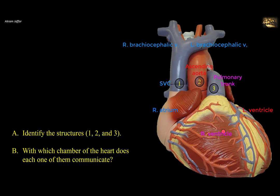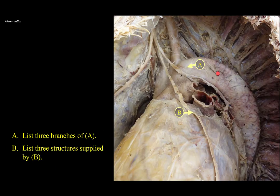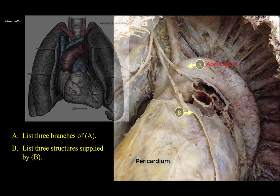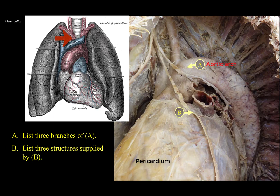List the three branches of A and the three structures supplied by structure B. This is a view of the mediastinum from the left. Note the posterior thoracic wall with the sympathetic trunk beaded by ganglia, and the middle mediastinum occupied by the pericardium enclosing the heart. Structure A is located in the superior mediastinum — it is the arch of the aorta with three branches. The first branch, given to the right and not seen in this view, is the brachycephalic trunk.